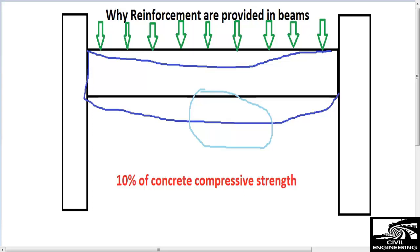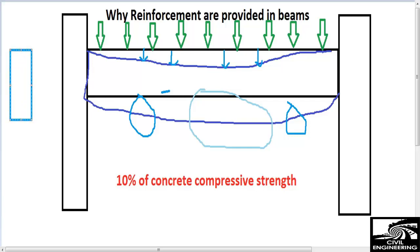This means concrete cannot take any tension. As I show you here, it cannot take tension, which is why in this direction it shows deflection. Because of this deflection, the beam moves from its original path and shows a huge deflection. I'm also showing you the cross-section of the beam here — the center line — and it will deflect in this direction.